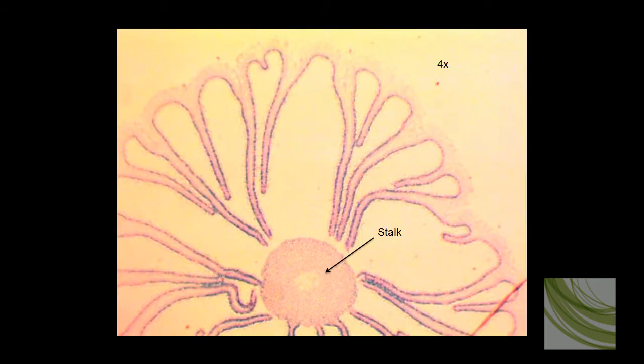Now here is a different slide using the 4x objective. This slide has faded over time, but I selected it because we can actually see the cap, the stalk, and the gills. And you can even see at 4x a few of these little fuzzy spots—those are actually spores.